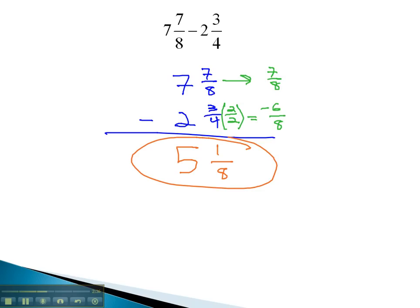To subtract with mixed numbers, we simply line everything up, do the fractions first, and the whole numbers second.